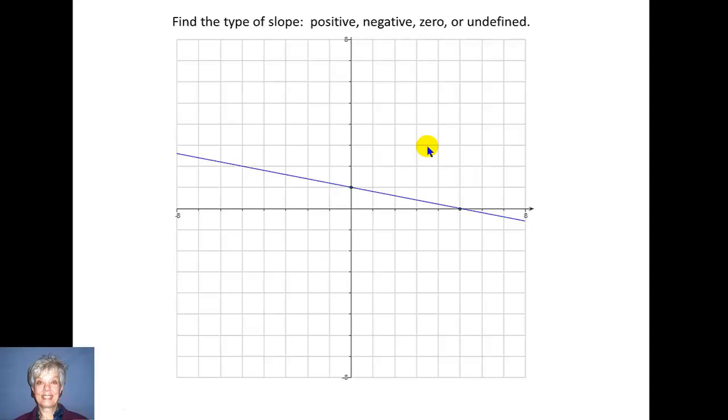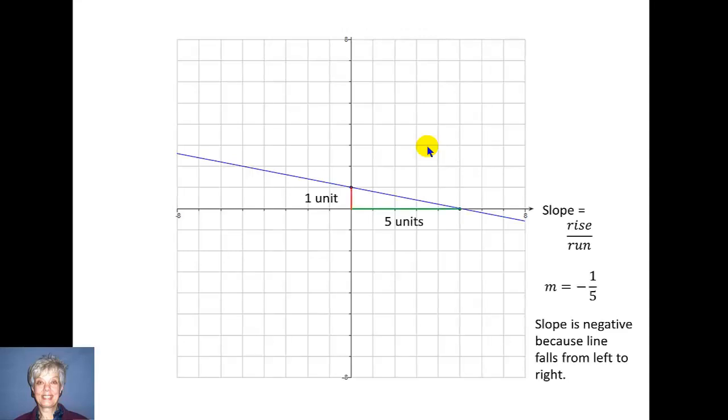Now, here we have another line. And we're supposed to find the slope. Here's the rise. The rise is 1 unit. Here are the two points. And we make a triangle between those two points. This side is the rise. This side is the run. And since slope is rise over run, we know that the number part is going to be 1/5. But why is it negative? Because this line falls from left to right.